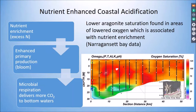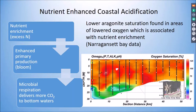We can also have nutrient-enhanced coastal acidification, where there are lower aragonite saturation values and higher CO2 found in areas of low oxygen. When nutrients come in, that causes enhanced primary productivity. That excess productivity sinks to the bottom and starts to be decomposed by microbial respiration, delivering more CO2 to the bottom water — this is CO2 driven by nutrient input, not atmospheric CO2. Here's data from Narragansett Bay showing low oxygen saturation values corresponding to the lowest omega values.